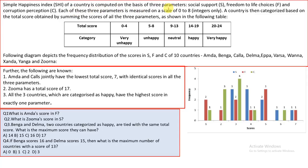The simple happiness index of a country is computed on the basis of three parameters: social support, freedom of life choices, and corruption perception. Each of these parameters is measured on a scale of 0 to 8, integers only. A country is then categorized based on the total score obtained by summing the scores of all three parameters. So 0 to 4 is very unhappy, 5 to 8 is unhappy, 9 to 13 is neutral, and so on.